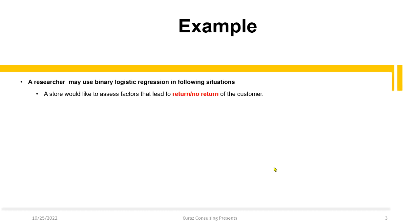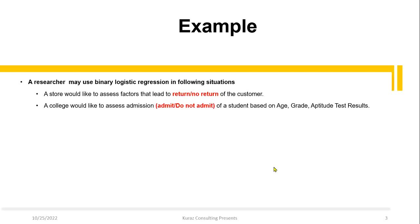Binary logistic regression addresses whether a candidate has a return or no return of a customer. For example, a college would like to assess admission or no admission of a student based on independent variables such as age, grade, and aptitude result. What is the probability that a candidate is going to be accepted or not accepted, based on these predictors?